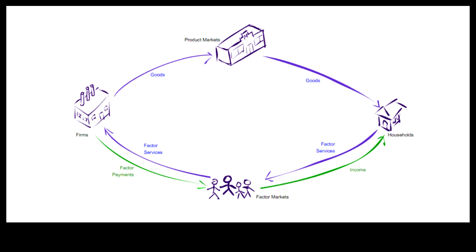In return, firms receive payments from the households. So the circular flow of payments and products is now completed.